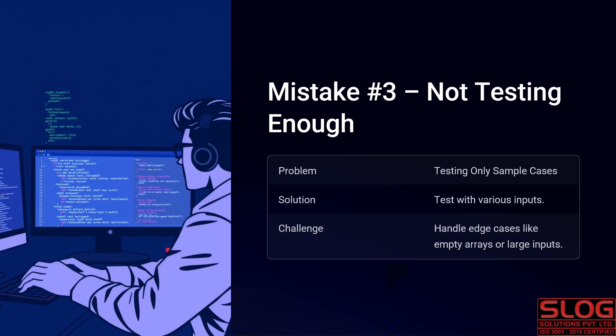Common mistake 3 is not testing enough — we have not tested our code properly. The problem is testing only sample cases. The solution is to test with various inputs. The challenge is to handle edge cases like empty arrays or large inputs. For array-related code, if you test only sample cases, some edge cases may fail. You have to test more cases with various inputs.